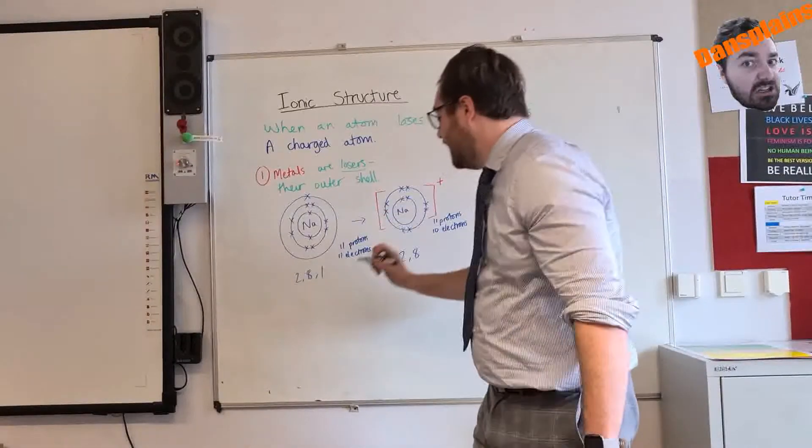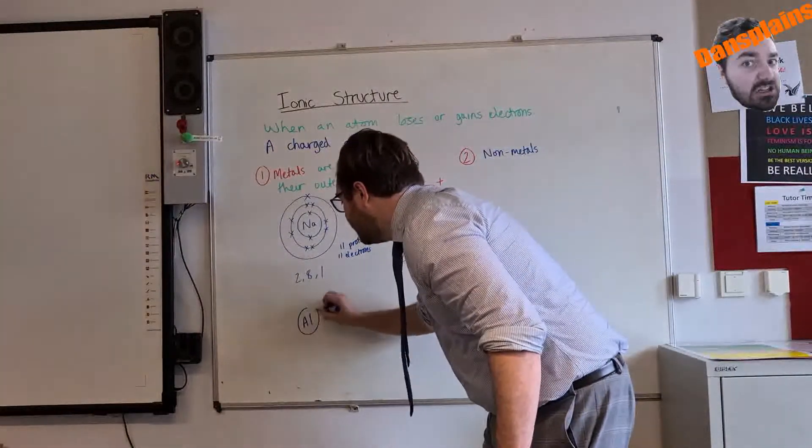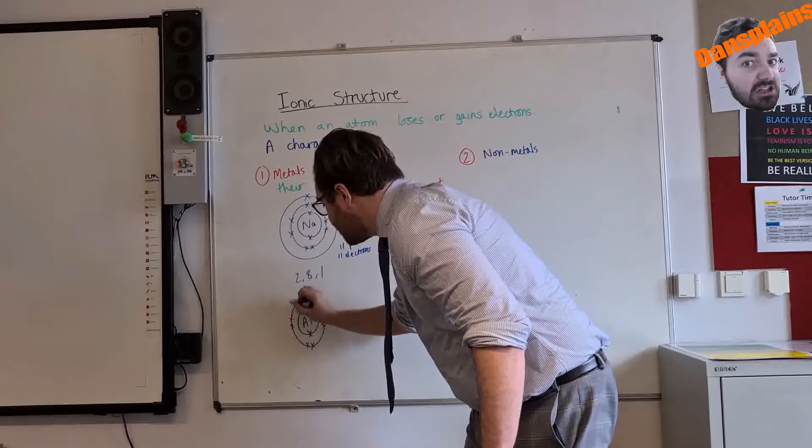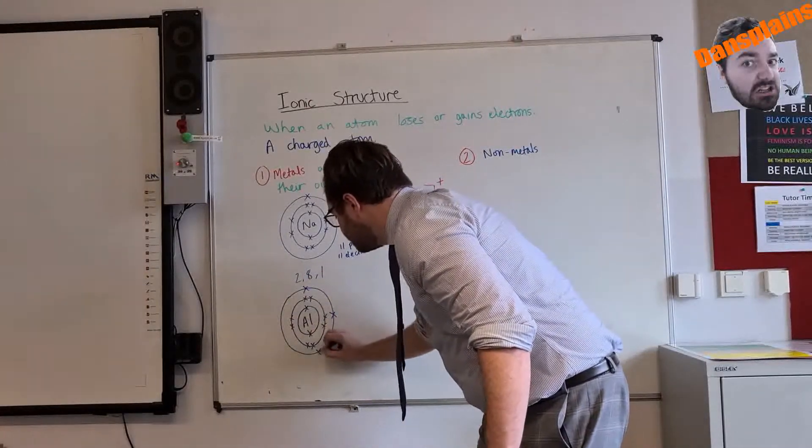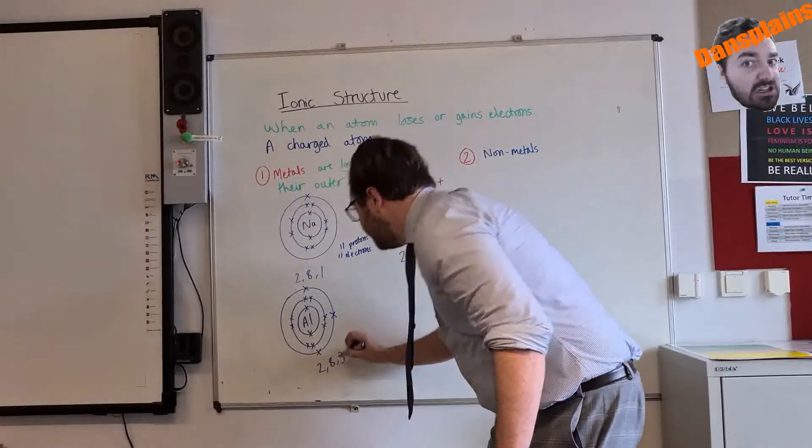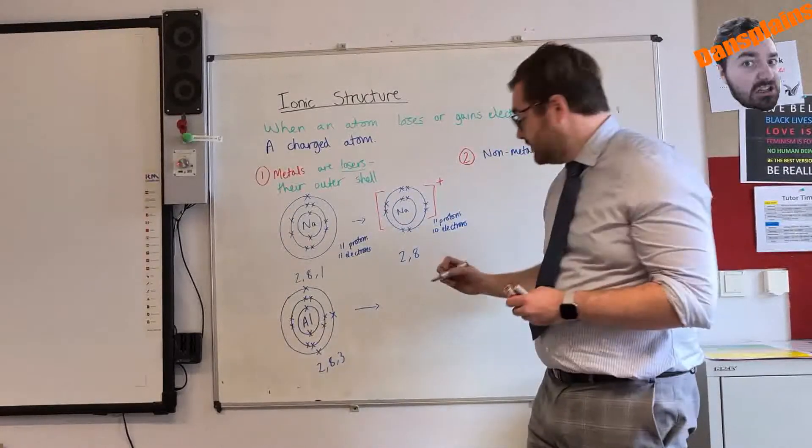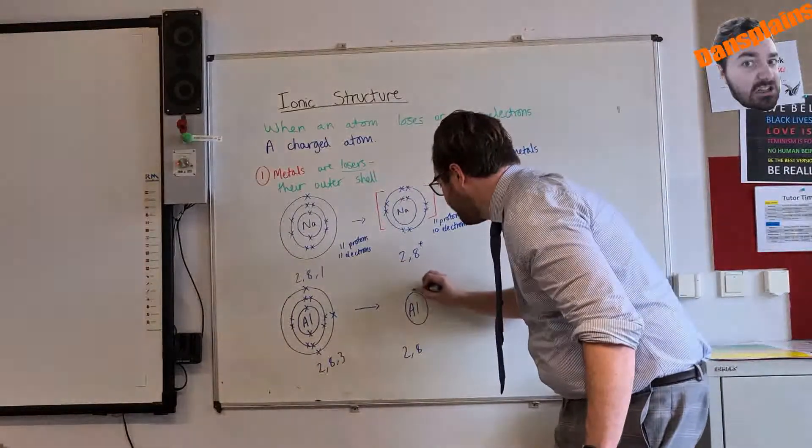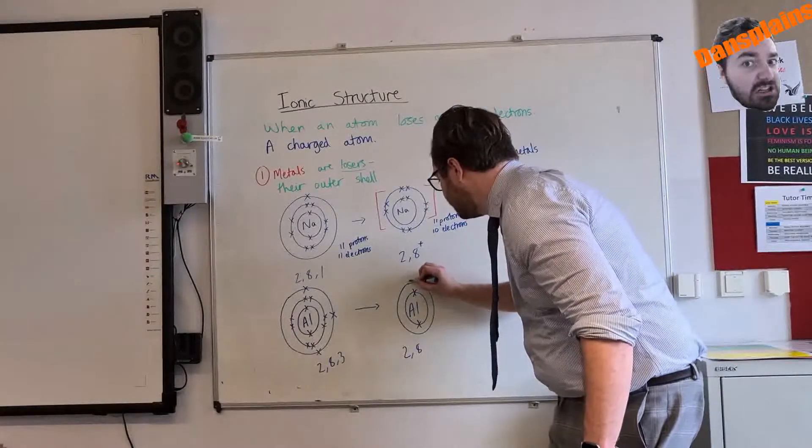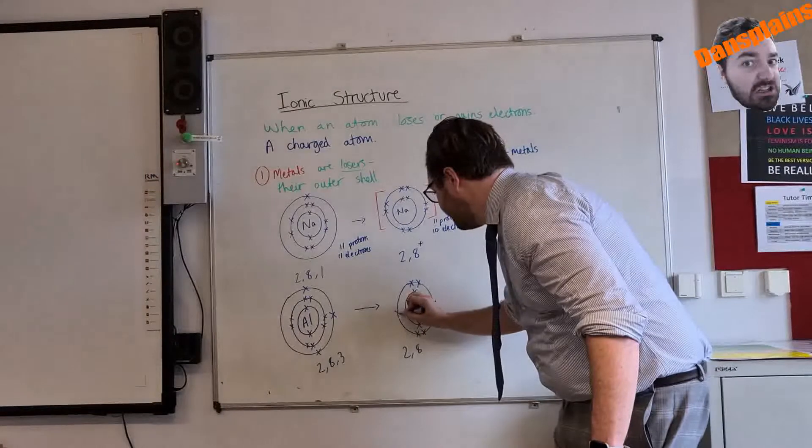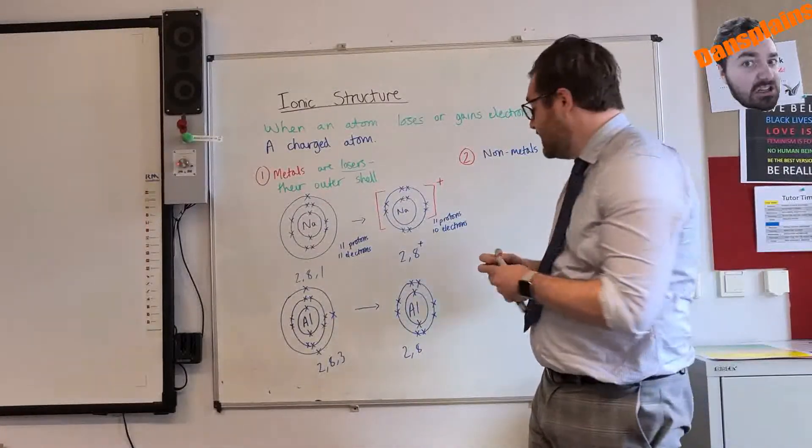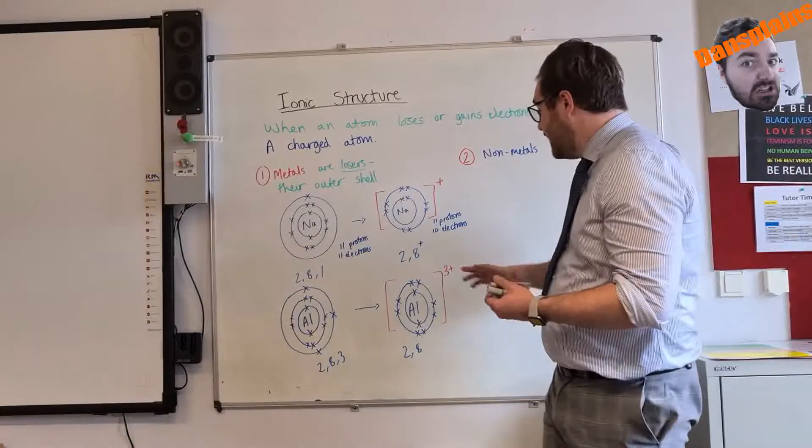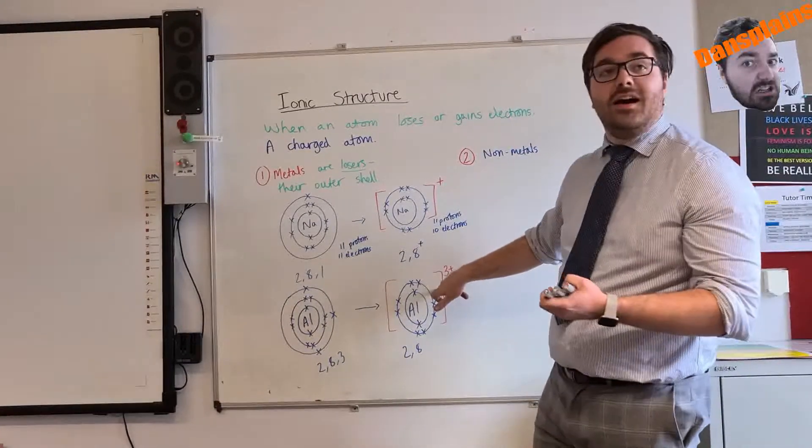I'll do one more example. If I have aluminium, that is 2, 8, 3. It's going to lose its outer shell to make 2, 8. So I'll put the plus there to make 2, 8. But as I've lost 3 electrons, that makes it a 3 plus charge, because I now have 13 protons and 10 electrons.